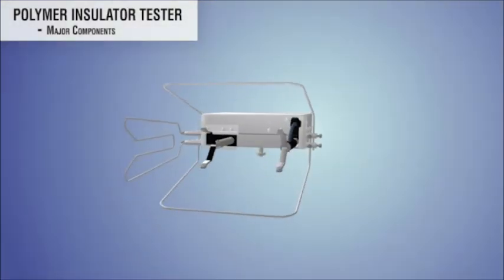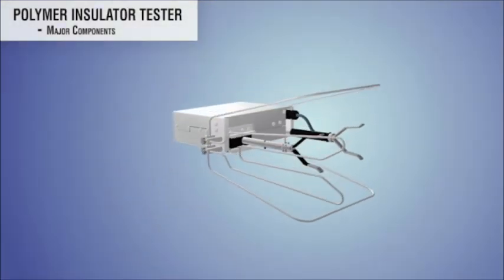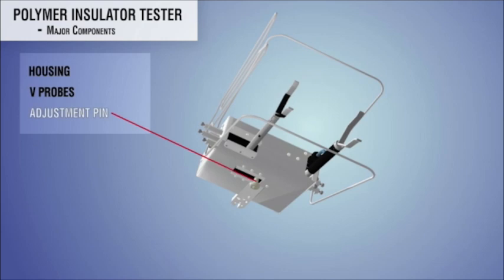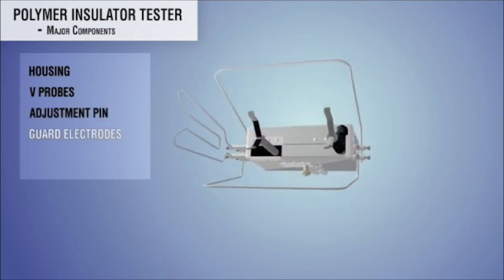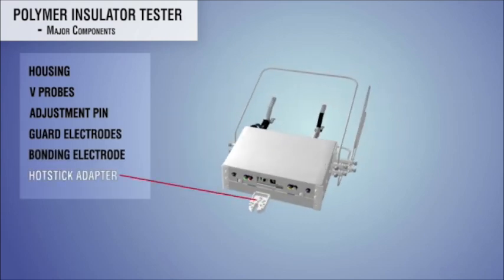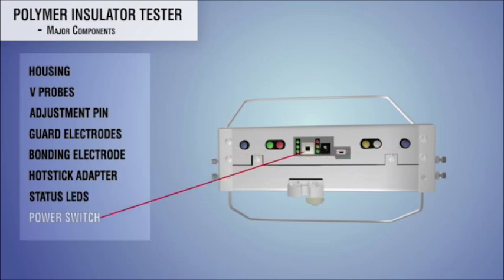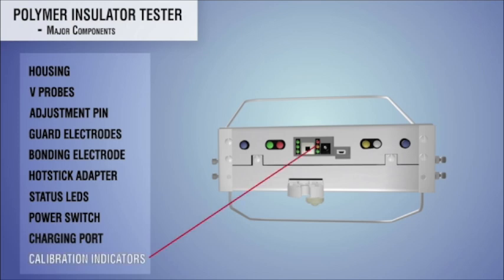The polymer insulator tester consists of a number of major components: housing, high-voltage and grounded V-probes, V-probe spacing adjustment pin, guard electrodes, bonding electrode, hot-stick adapter, status LEDs, power switch, charging port, and calibration indicators.